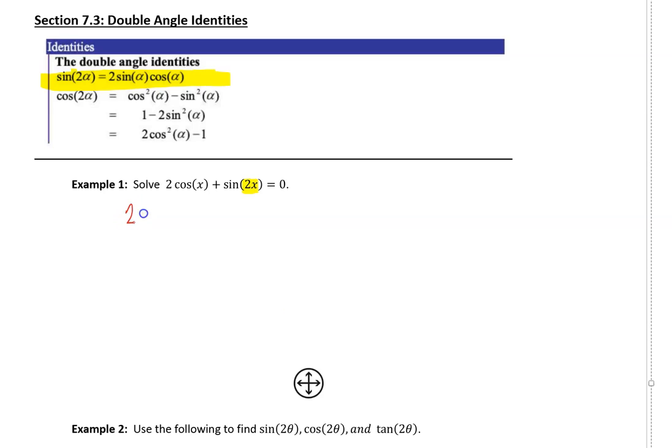So I'm going to take 2 cosine of x plus instead of sine 2x, I'm going to say 2 sine x cosine x. And you can see that I had 2 times an alpha, so it just becomes alpha over here. So that's why I went from a 2x into a singular x equal to zero.